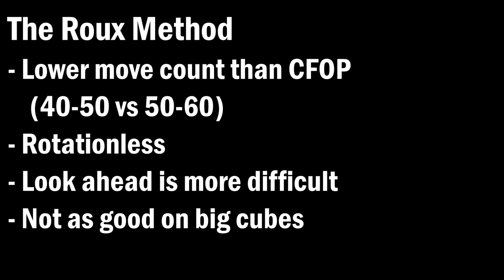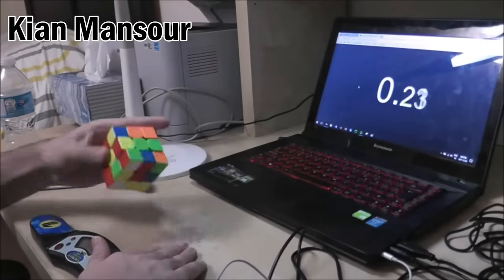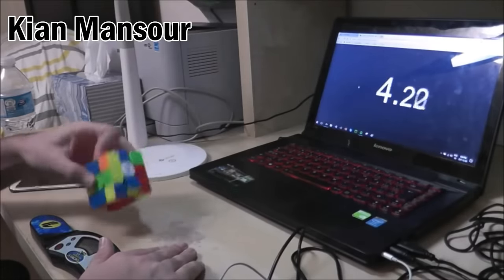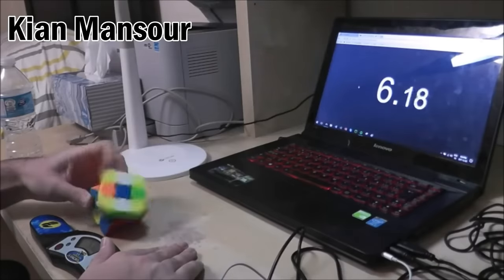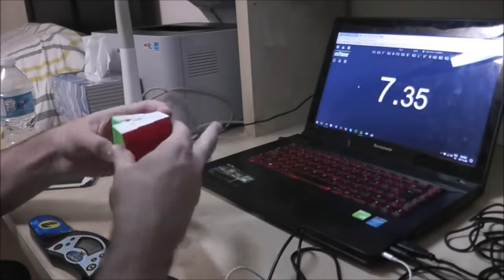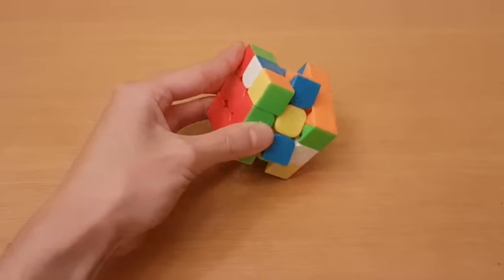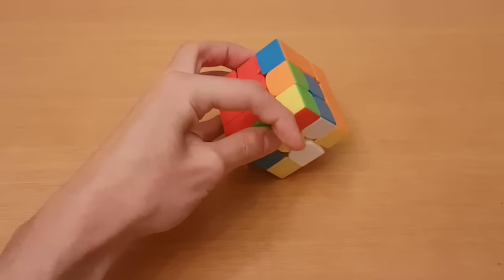Roux is also not as good on big cubes because M slices are very hard to do, but even though it doesn't seem this way, Roux is pretty good for one-handed. So the reason why Roux is good one-handed is because M slices actually require no rotations and can be pretty fast. I'm not good at them, but what you do is you put your hand against the table like this, and M' is done like this, M is done like that, and then U and U' are done like this.